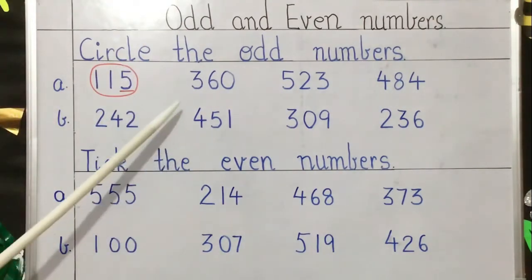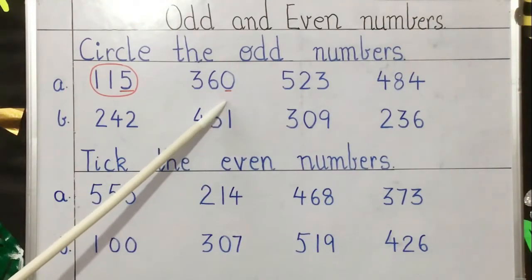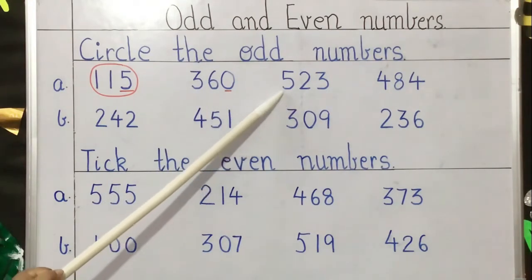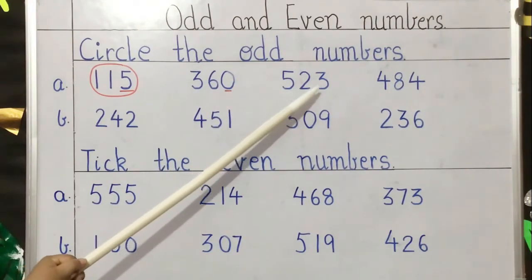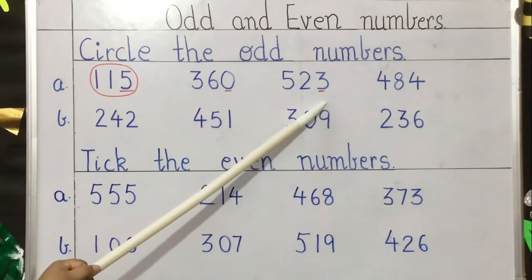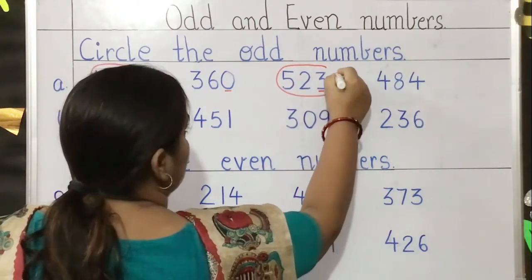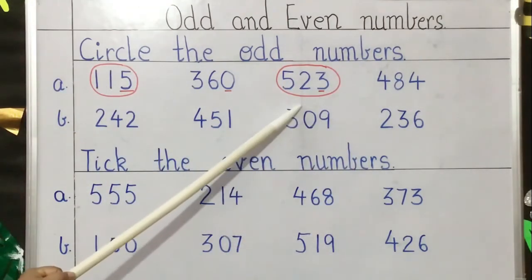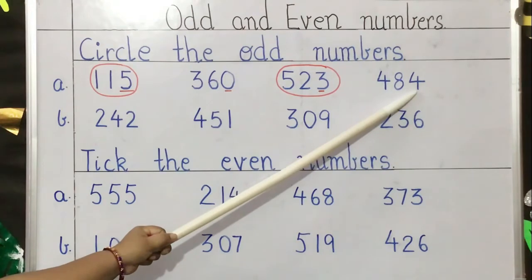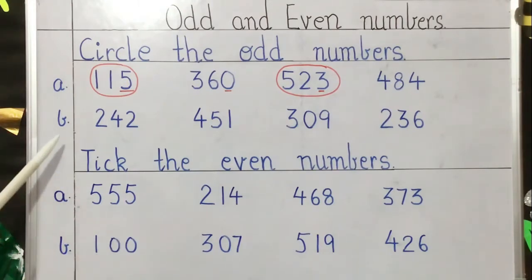The next number is 360. The last digit is zero. Any number ending with zero is an even number, so we will not circle this. The next number is 523 — check the last digit, here it is 3. Any number ending with 3 is an odd number, so we will circle 523. The next number is 484. The last digit is 4, and any number ending with 4 is an even number, so we will leave this number.